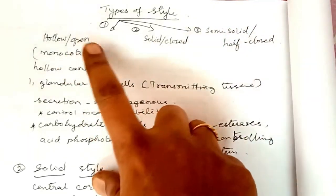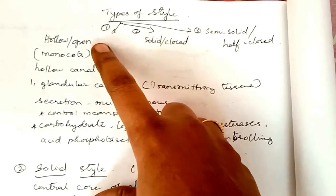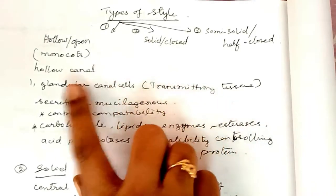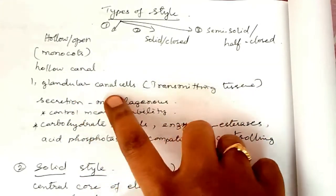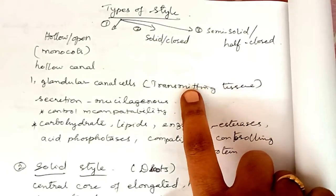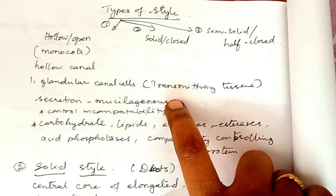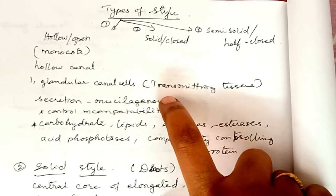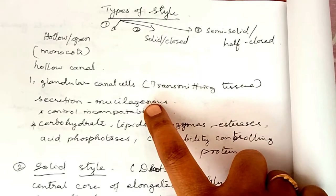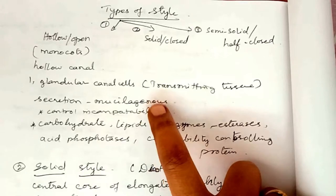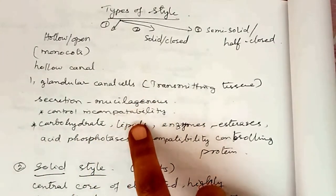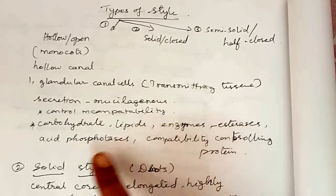The hollow and open style is common among monocots. A hollow canal runs from the stigma to the base of the style, lined by glandular canal cells forming the transmitting tissue. This transmitting tissue secretes a mucilaginous substance, and the pollen tube grows on the surface of these lining cells. The canal secretion provides nutrition for the pollen tube and controls incompatibility reactions. The secretion contains carbohydrates, lipids, and enzymes like esterases and acid phosphatases, as well as compatibility-controlling proteins.